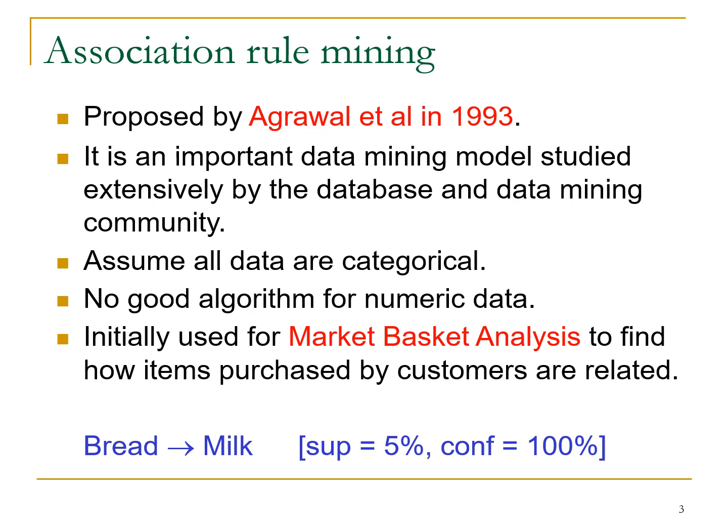Whenever we have a dataset with more categorical values, we can go with this algorithm. It was initially used for market basket analysis to find how items are purchased by customers. Market basket analysis means we analyze customers' way of purchasing. For example, if a person is buying milk, there is a high chance of buying bread along with it. If a person is buying toys or kids' items, they will likely buy kids' diapers too. We identify these kinds of relations based on the dataset — how many customers purchased which items — and from that pattern we find the association between items.